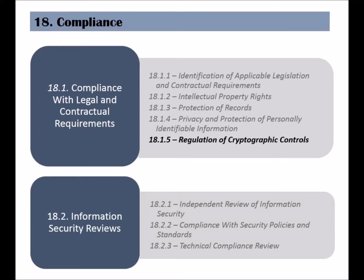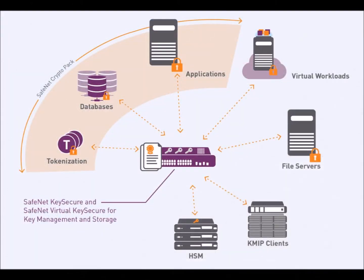The fifth and last control of the Compliance with Legal and Contractual Requirements category is called Regulation of Cryptographic Controls. This control is to ensure that the organization abides by the laws and regulations that specify the use of cryptographic controls. The organization should identify and comply with legal and regulatory requirements related to the use of encryption and cryptographic functions.